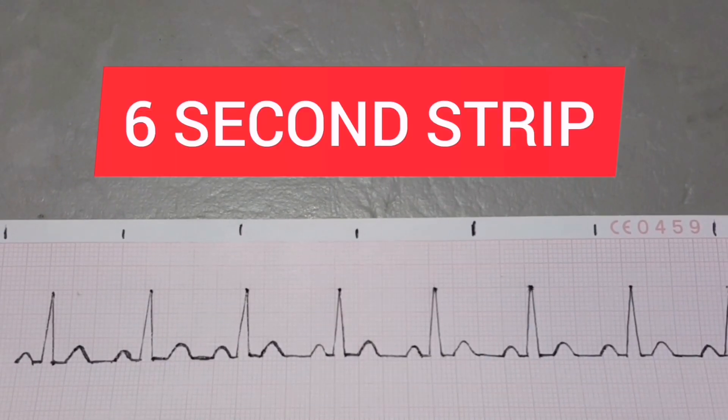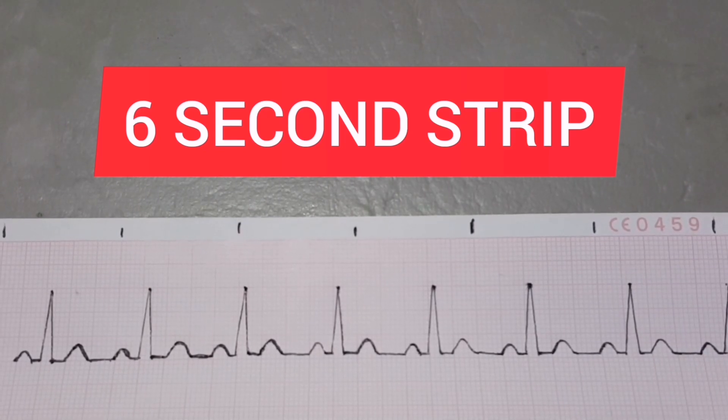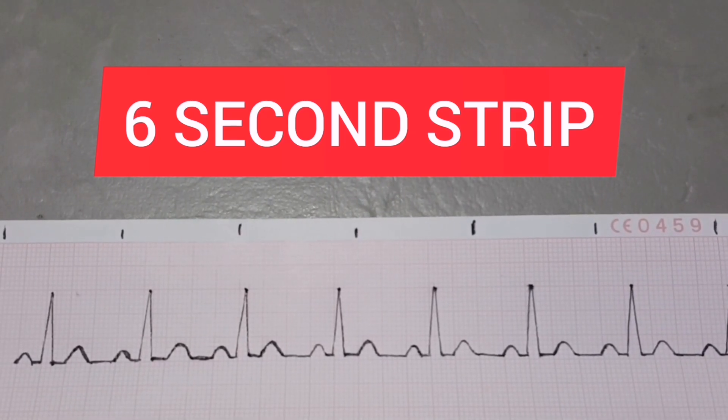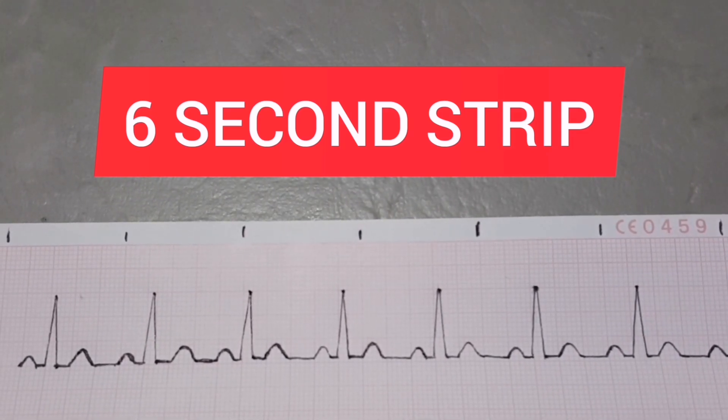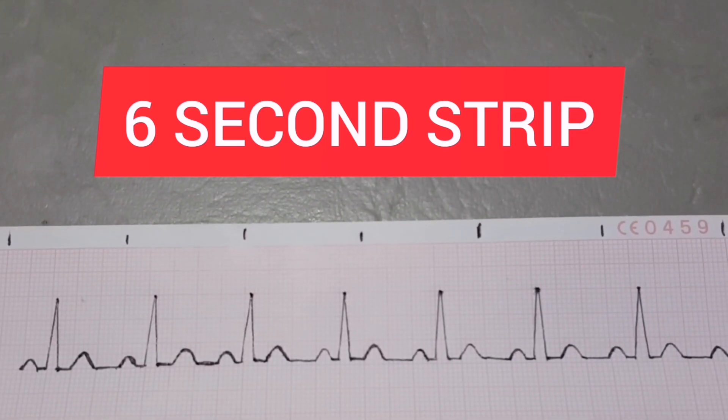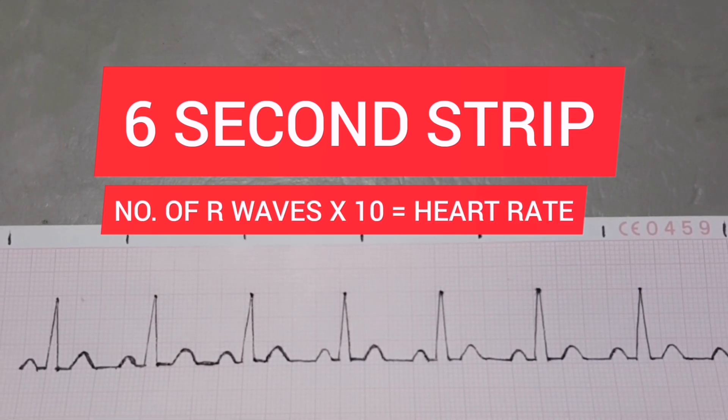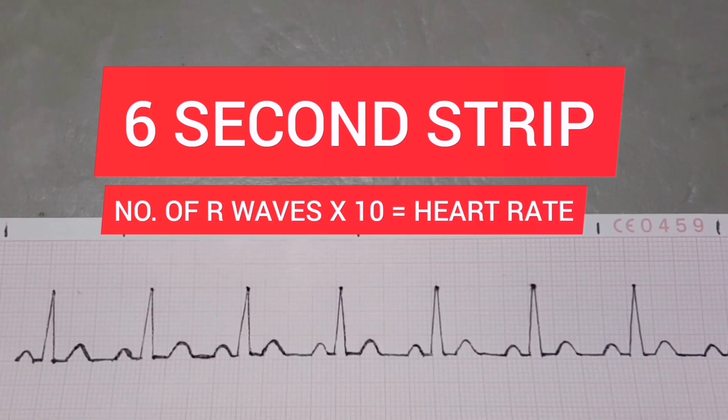For the six-second strip, just count 30 big boxes horizontally so that you will have a six-second strip. Now, count the number of R-waves in a QRS complex and multiply by 10. Simply, R-waves times 10 is equal to heart rate.